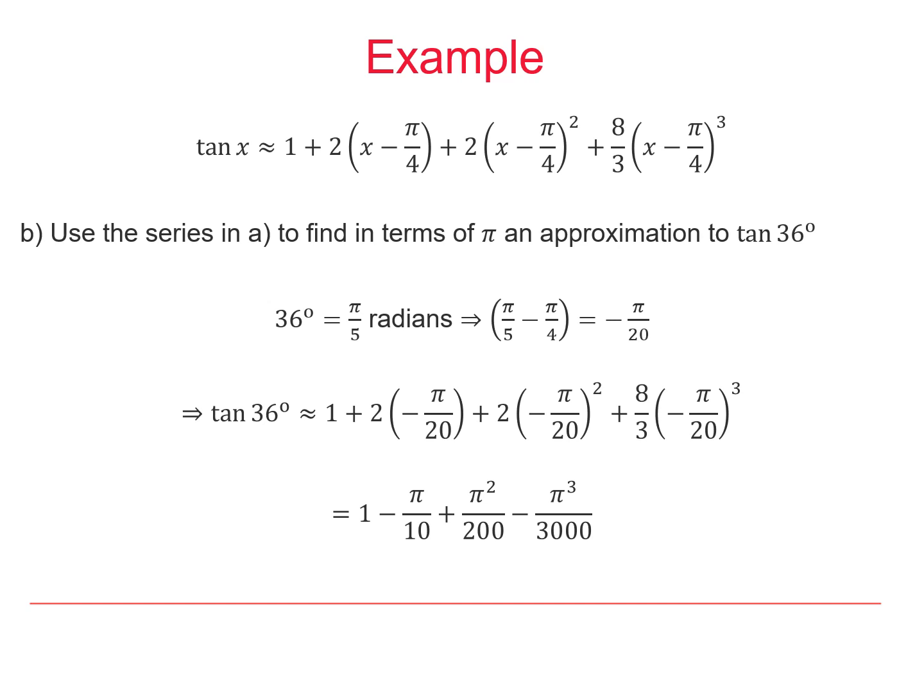In the second part of the example, we're asked to use our series to approximate a value of tan 36 degrees. 36 degrees is π over 5 radians. We then need to evaluate x minus π over 4. So π over 5 minus π over 4 gives us negative π over 20.